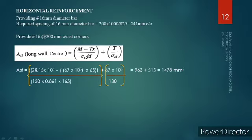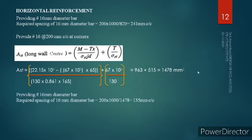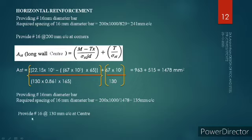For the long wall center, Mx = 22.55 × 10⁶ Nmm (using 22.15 as substituted), T = 67 kN, x = 65 mm. Substituting all components gives total AST = 1478 mm². Providing 16 mm diameter bars, the spacing = 135 mm c/c. We provide 16 mm dia bar at 130 mm center to center at the center of the long wall.